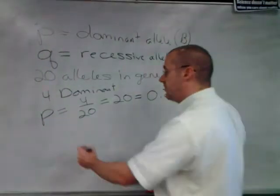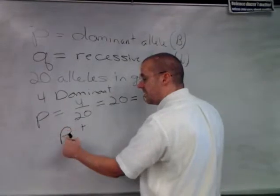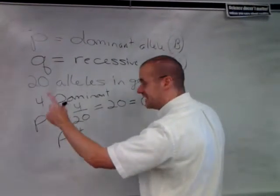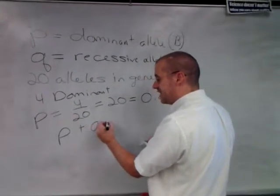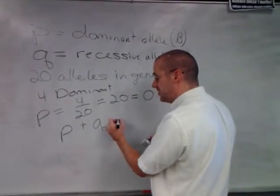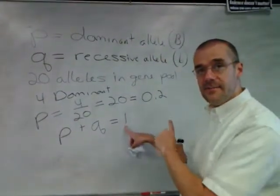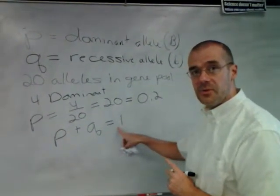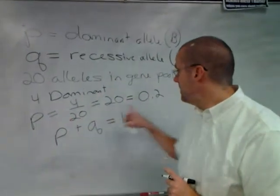So now, the first equation you have to know is they said the ratio of, or the percent occurring of the dominant allele, P, plus the percent occurring of the recessive allele, Q, is going to equal every allele in that population, 100% or 1. And so with this, we know that P is 0.2.